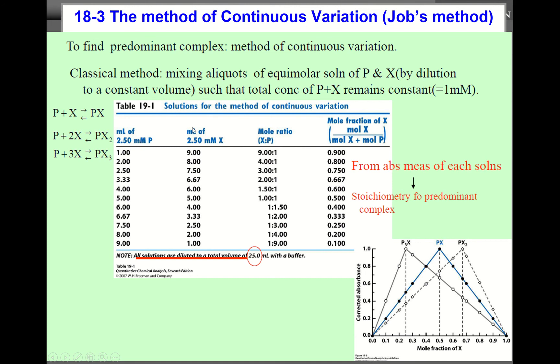So we can calculate the mole ratio X to P. In this case, the first case, the original concentration is the same, 2.5 millimolar. But since X volume is 9 and P volume is 1, the mole ratio X to P is 9 to 1. In this case, the mole fraction of X is, total volume is 10, 9 out of 10 is 0.9. In the second case, you increased the volume of P to 2 milliliters and decreased X volume to 8, but total volume is all the time 10.